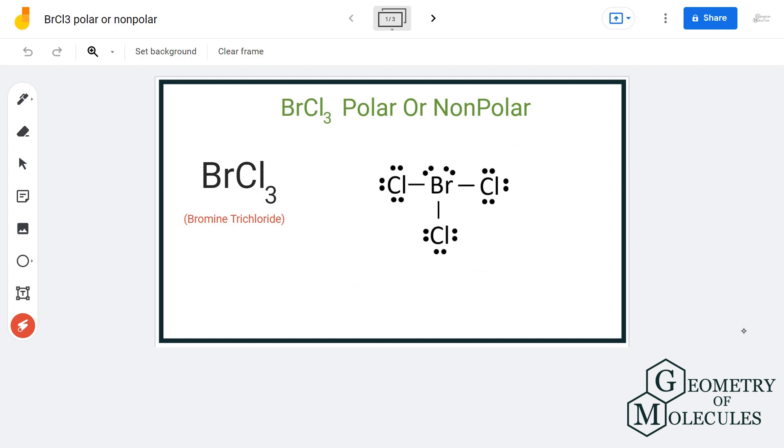So this is the Lewis structure of BrCl3, in which bromine is forming three single bonds with chlorine atoms, but it also has two lone pairs of electrons. Generally, molecules that have central atoms with lone pairs are polar in nature.